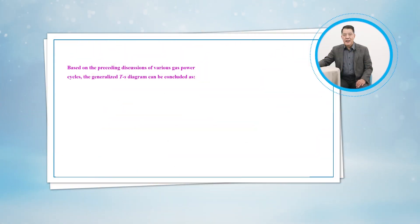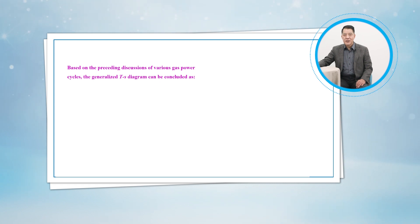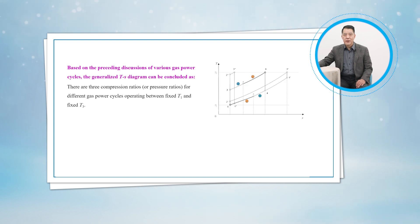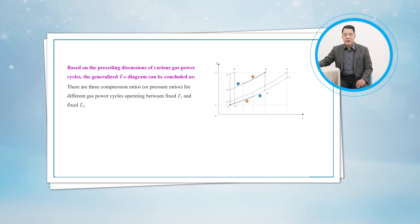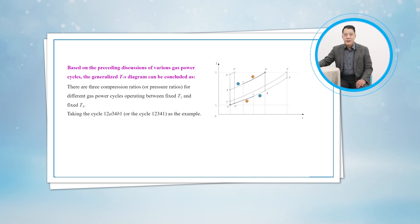Based on the preceding discussions of various gas power cycles, the generalized T-S diagram can be concluded as follows. There are three compression ratios for different gas power cycles operating between fixed T-1 and fixed T-3, as shown in figure 10-38.